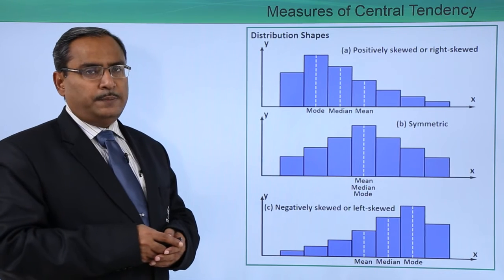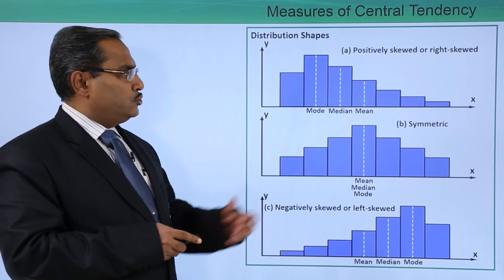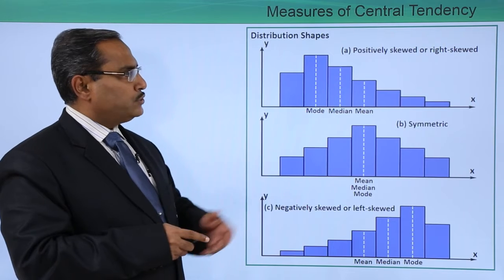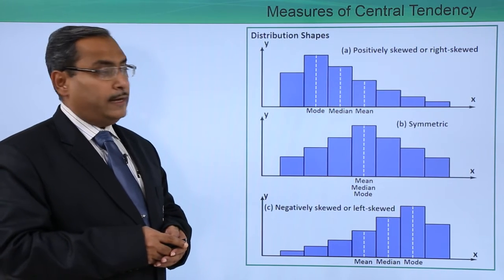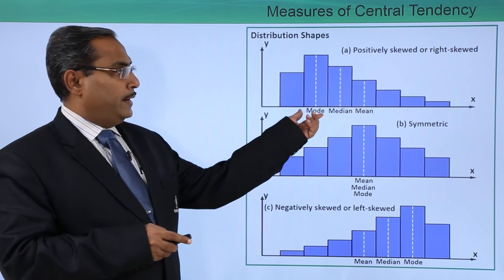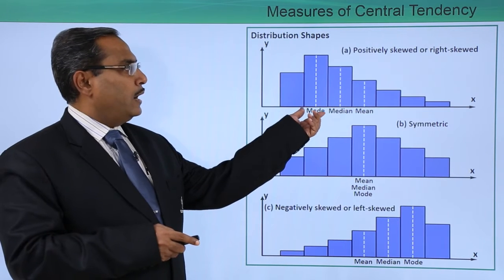Now consider the respective distribution shapes. Here it is about positively skewed or right skewed. In this case, what will happen? This particular bar will have the highest frequency.